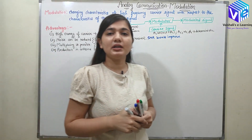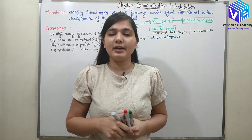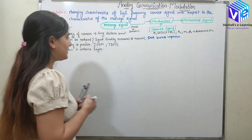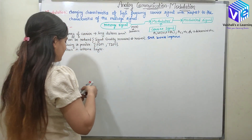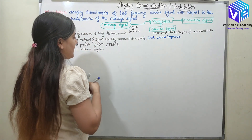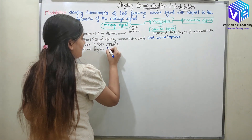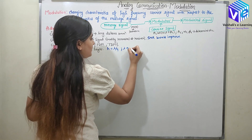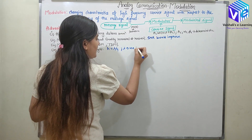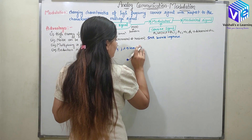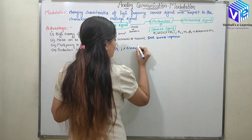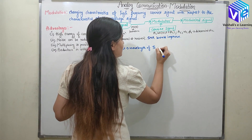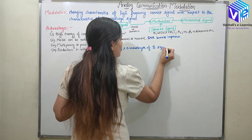The next advantage is the reduction in antenna height. We all have studied in our previous classes that the antenna height is equal to λ/4, where λ is the wavelength of the transmitted signal.